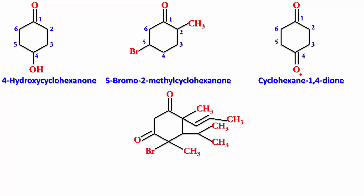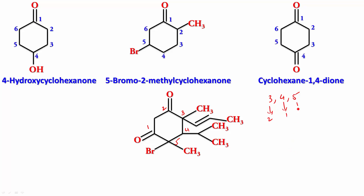Let's take something more complicated. Pause the video, number it, and name it. These two are the carbonyl carbons — one gets position 1 and the other automatically becomes 3. The question is which is 1 and which is 3, so let's try all possibilities. Suppose this is 1: then we get 2, 3, 4, 5, giving substituents at positions 3, 4, and 5 with counts of 2, 1, and 2 respectively.